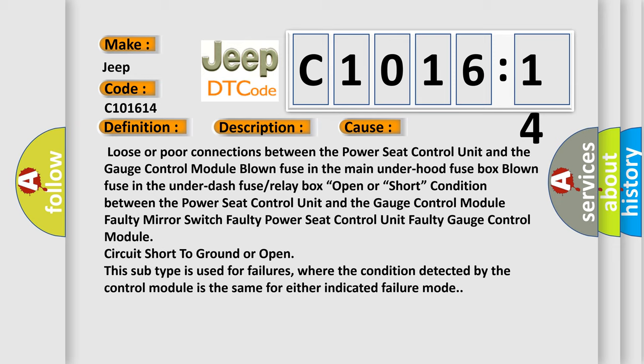underhood fuse box, blown fuse in the under-dash fuse or relay box, open or short condition between the power seat control unit and the gauge control module, faulty mirror switch, faulty power seat control unit, faulty gauge control module, circuit short to ground or open.